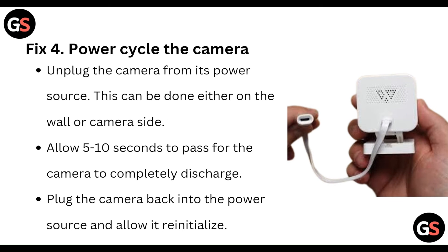Then power cycle the camera. Unplug the camera from its power source — this can be done either on the wall or camera side. Allow 5 to 10 seconds to pass for the camera to completely discharge, then plug the camera back into the power source and allow it to reinitialize.